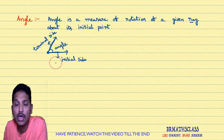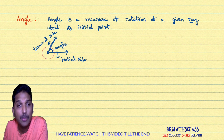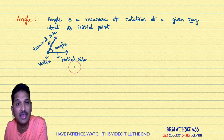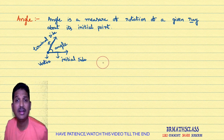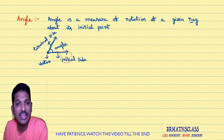We also need to know what is vertex of an angle. The point of rotation — this rotation is done about this point — the point of rotation is known as vertex. This point is known as the vertex of this angle. So we have learned three things: the definition of angle, initial side and terminal side of an angle, and vertex of an angle.